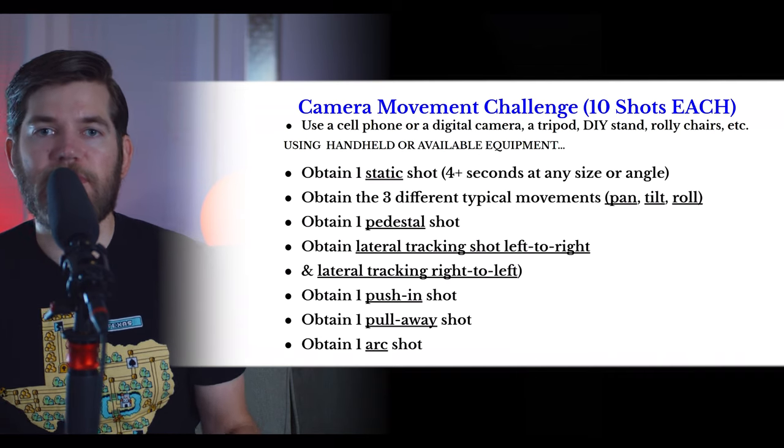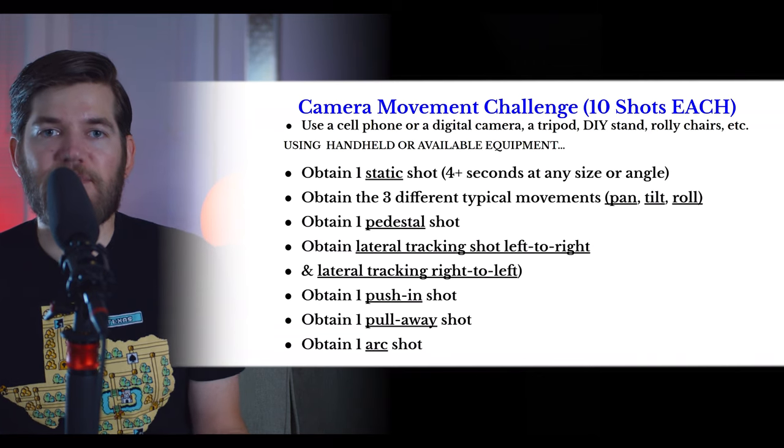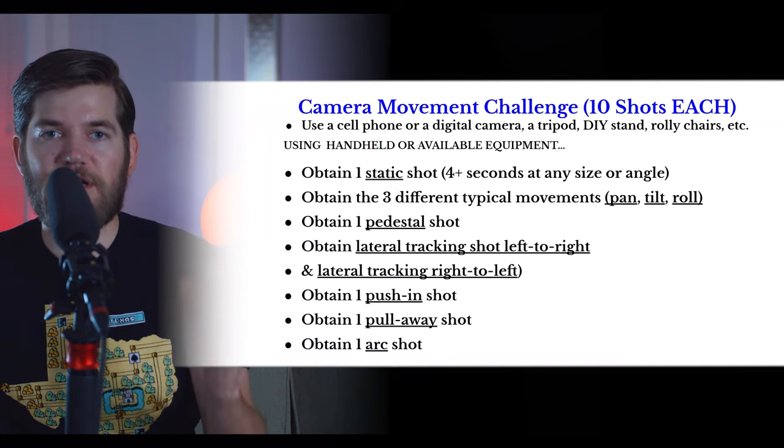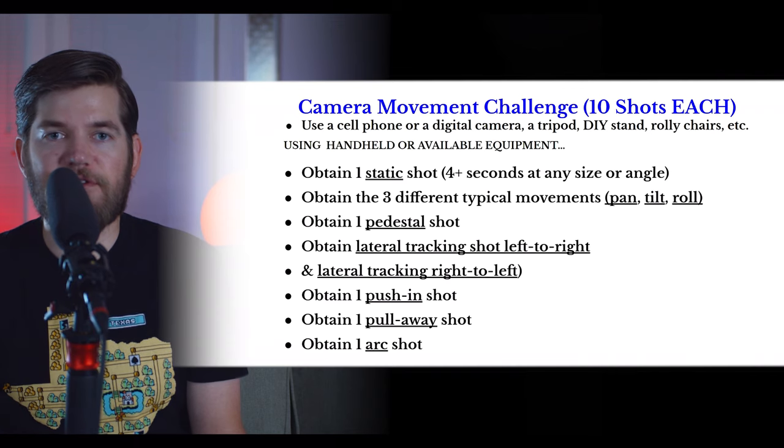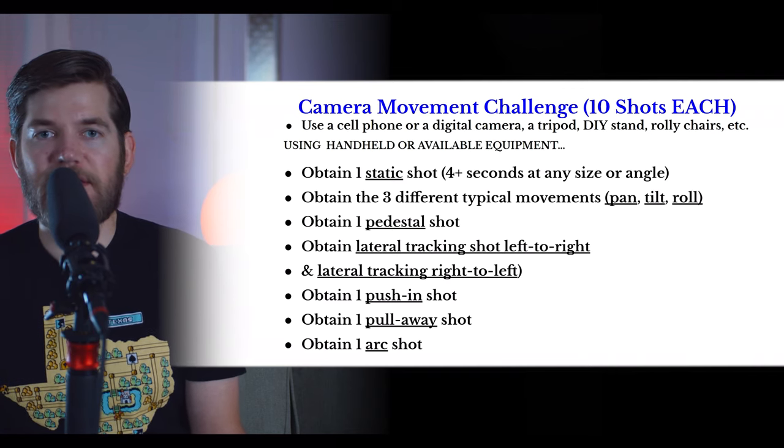Move smoothly around your subject and upload your best example, trimming off any mistakes. Try to get at least 180 degrees — at least half of a circle around your subject. Make sure you label each example with the correct vocab term, and for the lateral tracking shots, add left-to-right or right-to-left. Those are 10 video files you'll be uploading as examples of camera movement, all achievable handheld with a cell phone. Make sure you rename each file to match the type of camera movement.